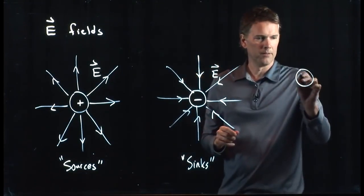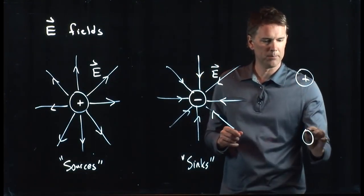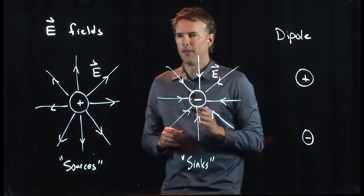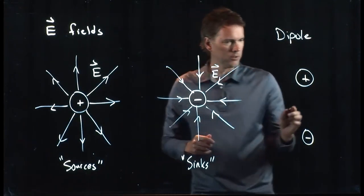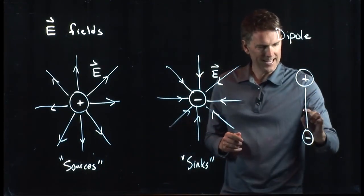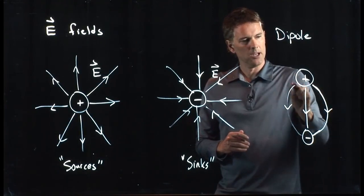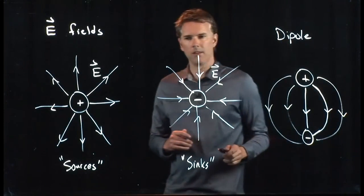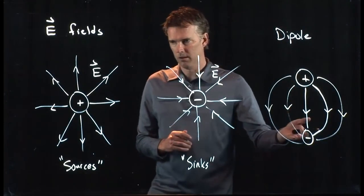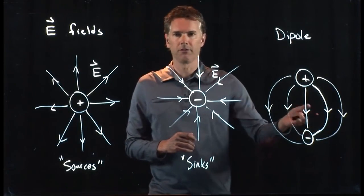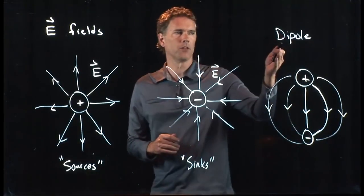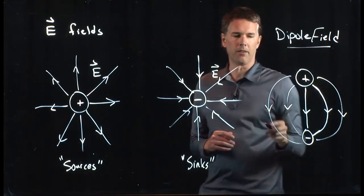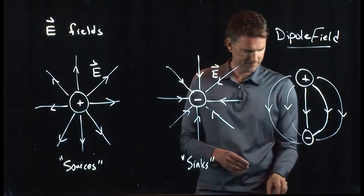When we put them together, we get the dipole field. And we talked about this a little bit earlier. And the dipole field looks like this. It goes out of the plus into the minus. And you can draw as many as you like. Okay. This is a dipole field. Lots of things in the universe are, of course, dipoles. And so this becomes an important field to be concerned about. The dipole field.